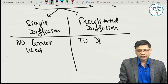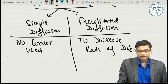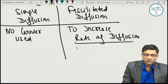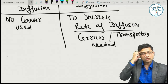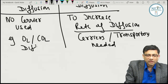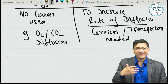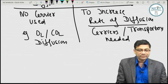Simple diffusion uses no carrier and is non-saturable — the rate keeps increasing with concentration, with no Vmax. Facilitated diffusion uses carriers (e.g., GLUT transporters) and follows saturation kinetics: at low concentration, the rate is faster than simple diffusion, but as all transporters become saturated, the rate reaches a fixed Vmax and cannot increase further.